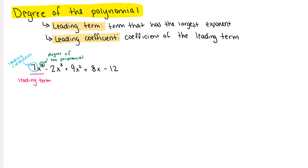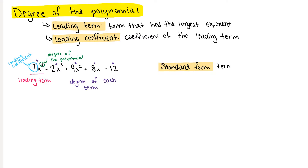We can find the degree of each of our terms. Going from left to right, the degrees are 4, 3, 2, 1, and 0 — found by looking at the exponent on our variable. We always want to make sure our polynomials are written in standard form, which means the terms are in order of exponent from largest to smallest.